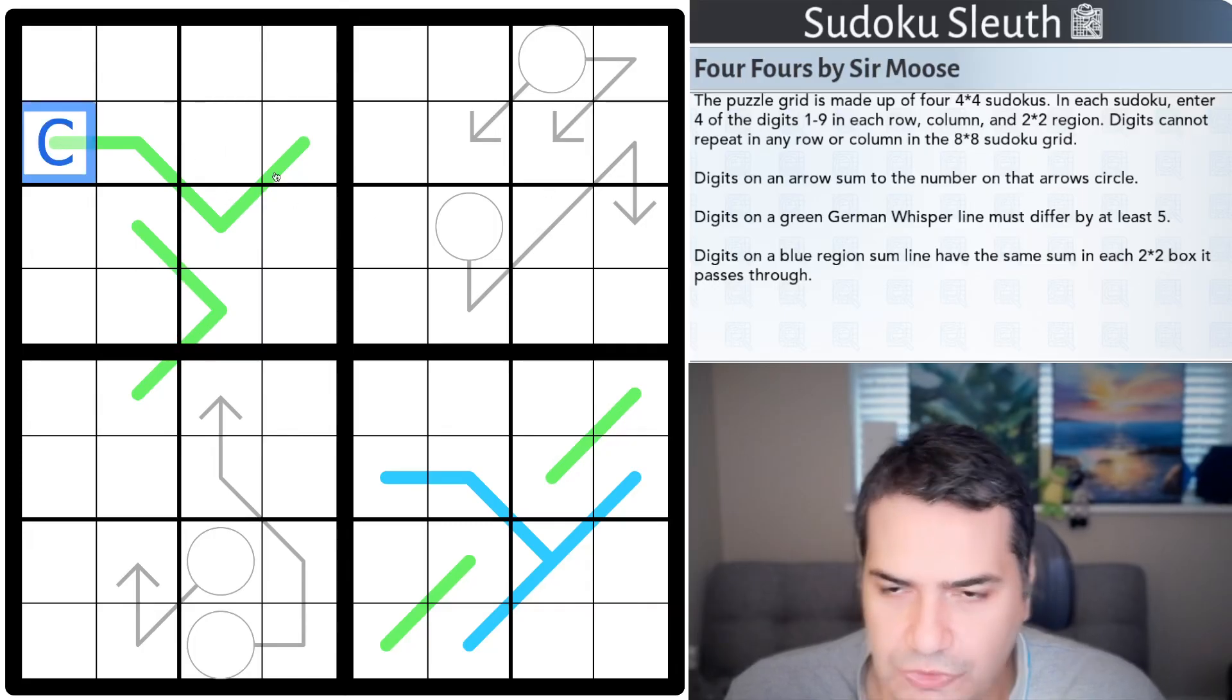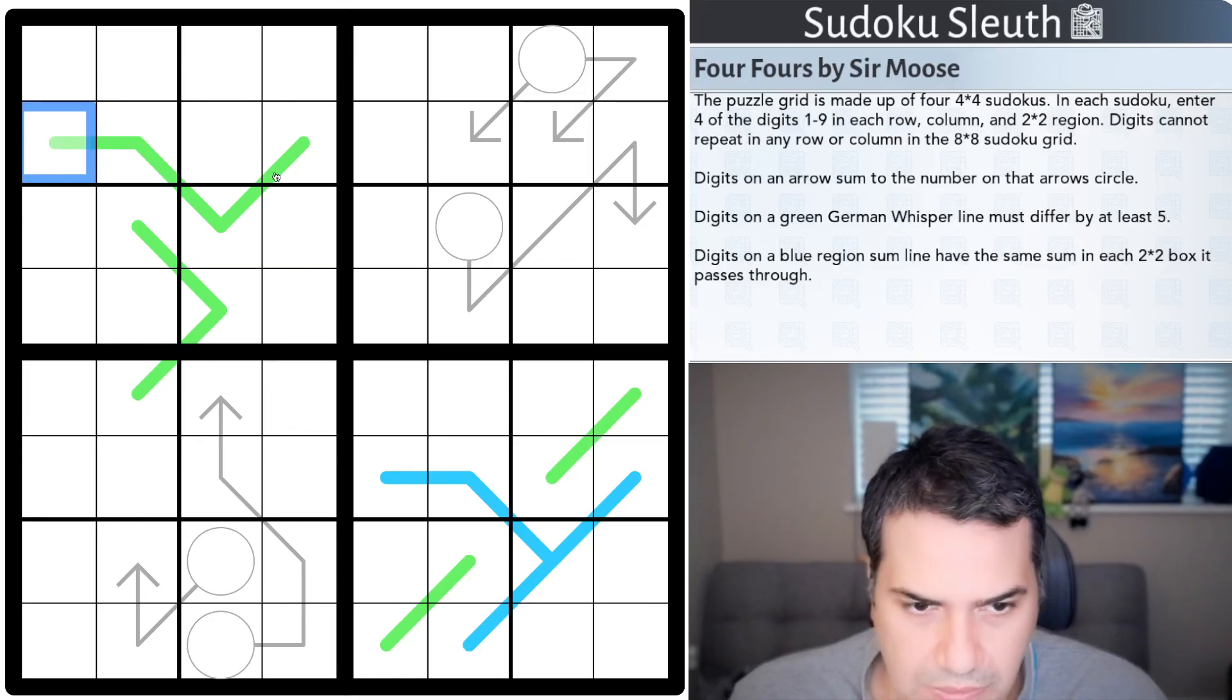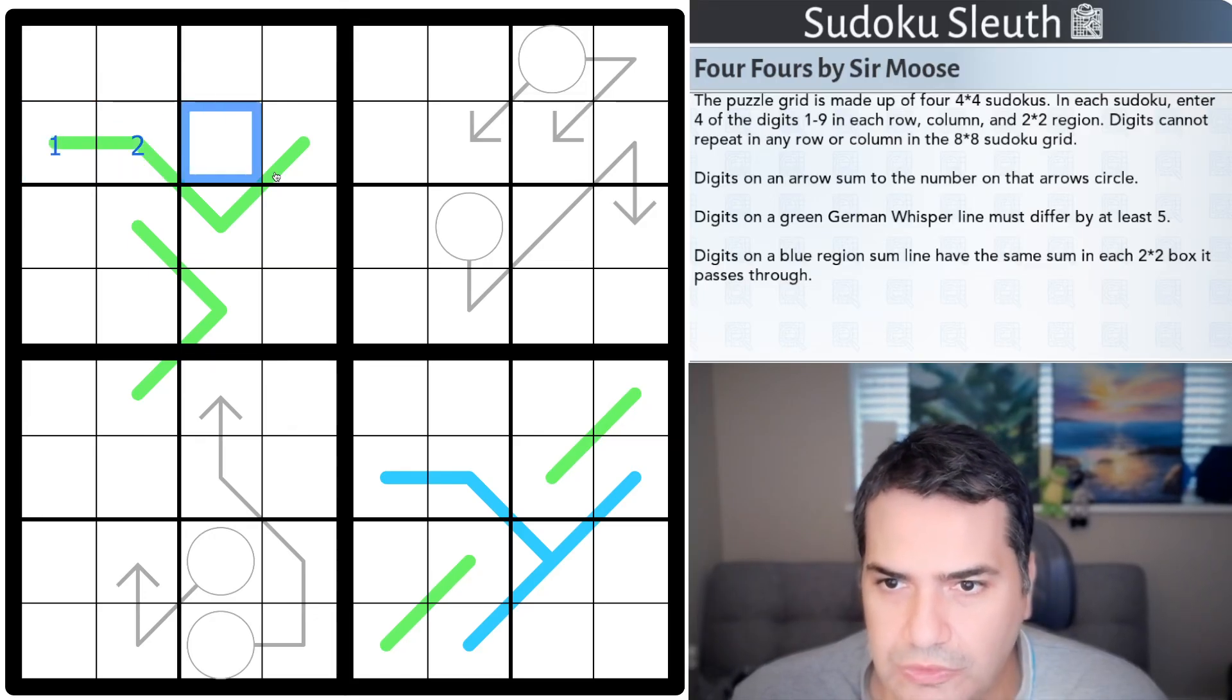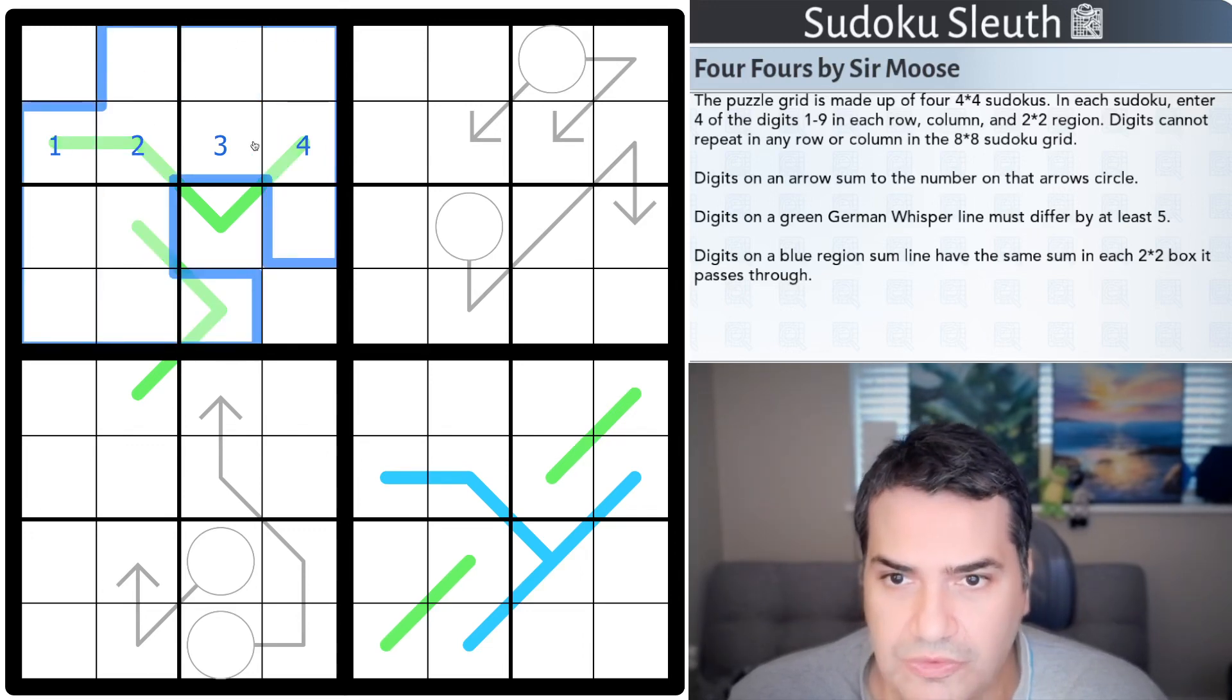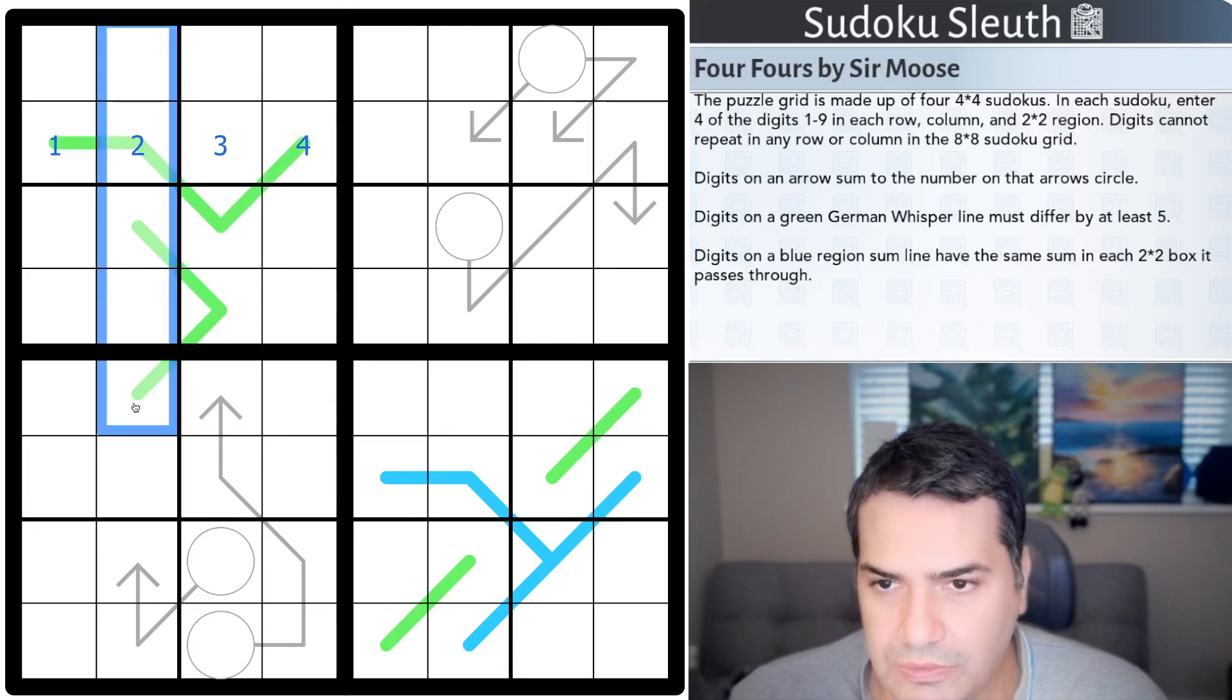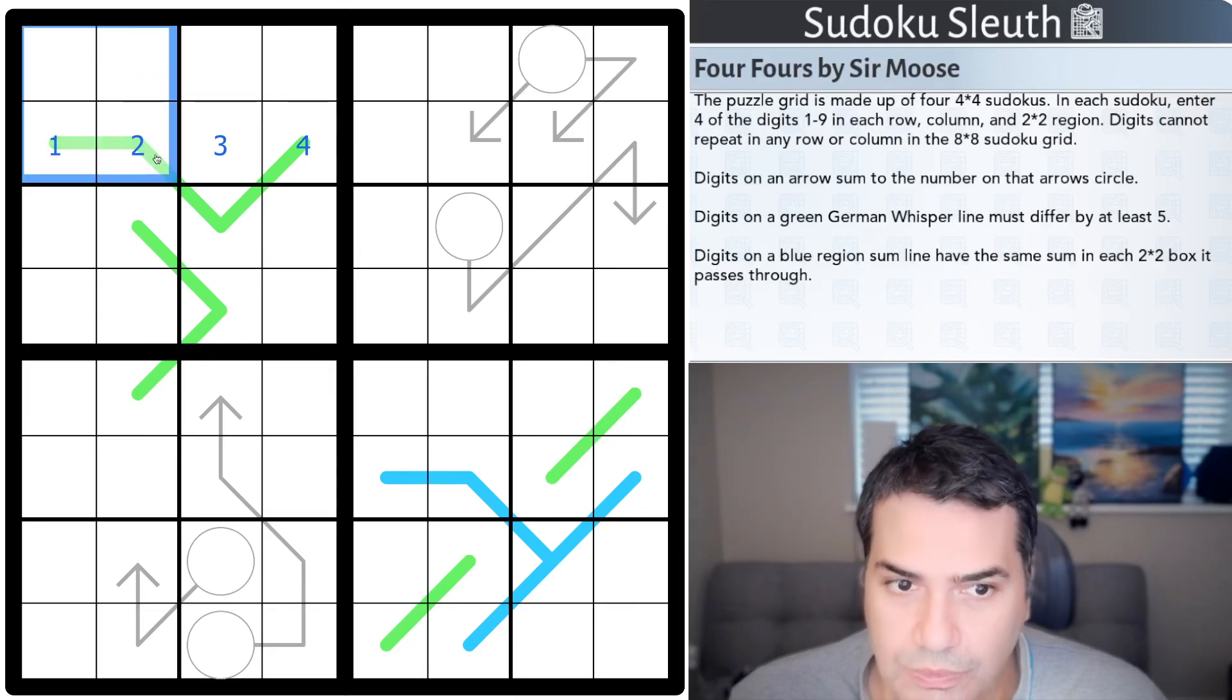So, I'm just going to make it up. Essentially, this will be 1, 2, 3, 4. I just happened to pick any four. And, essentially, within this 2x2 region, I have to place all of the digits 1, 2, 3, 4, once each in every row, column, and 2x2 box.